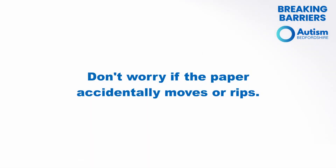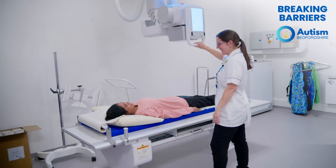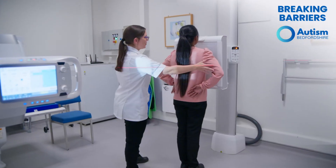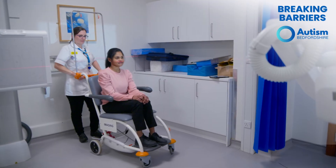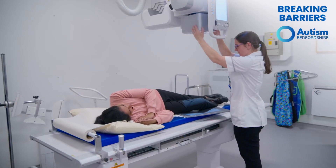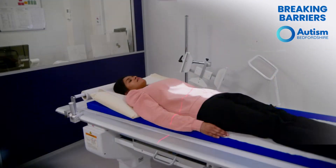For your x-ray you might be lying down, standing up, or sitting. You might be on a wheelchair, a trolley, or a bed, depending on why you have come for an x-ray. For example, if you are having your hips, back or abdomen x-rayed, then you are likely to be lying down on the x-ray bed.